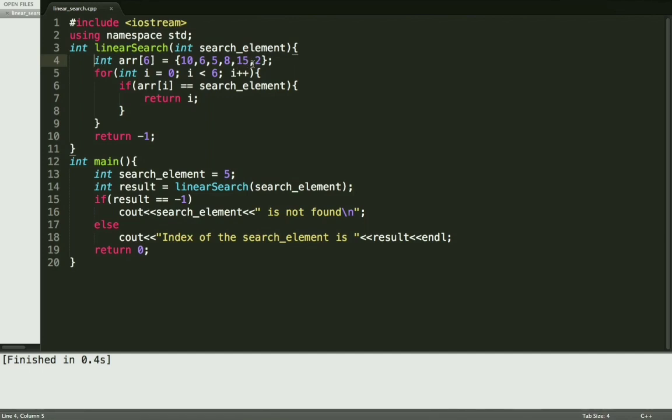inside this linearSearch function, I have declared one integer array of size 6 whose elements are 10, 6, 5, 8, 15, 2. Now this for loop is responsible for comparing each element of the array with the search element. If the match is found, then it will return its index, otherwise it will return -1.